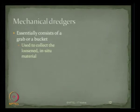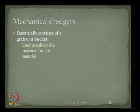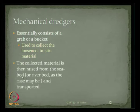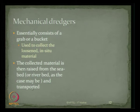Mechanical dredgers essentially consist of a grab or a bucket used to collect the loosened in-situ material. The collected material is raised from the sea bed or river bed and then transported. The three stages of operation are: deploy the dredger, collect the loosened material from the sea bed, then transport it.